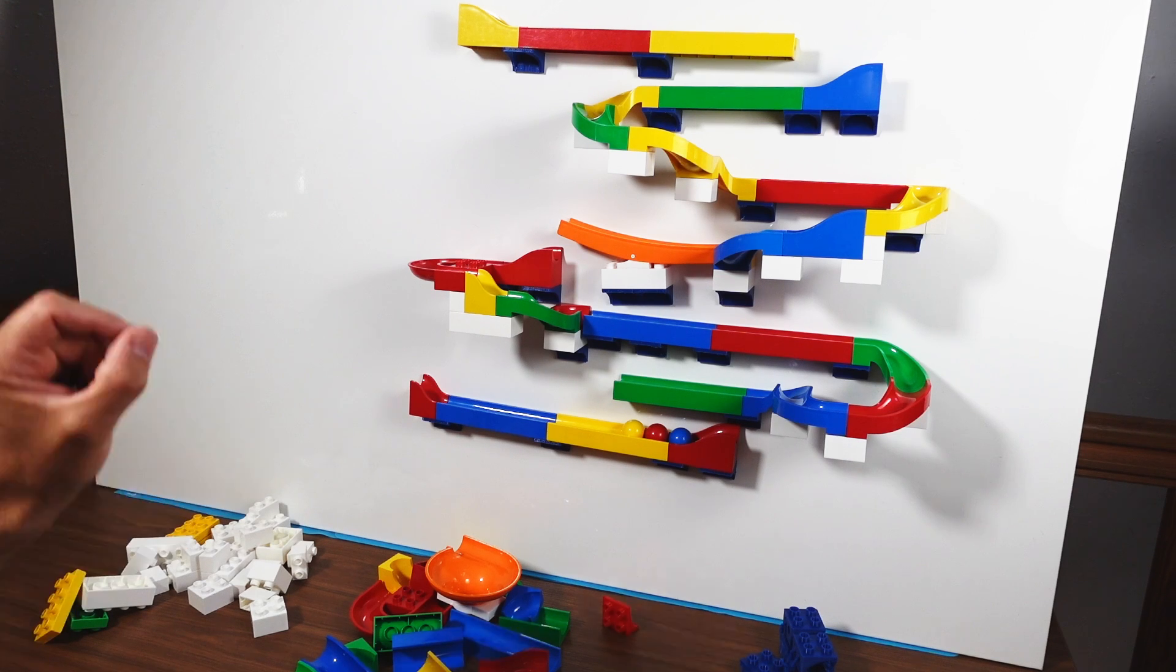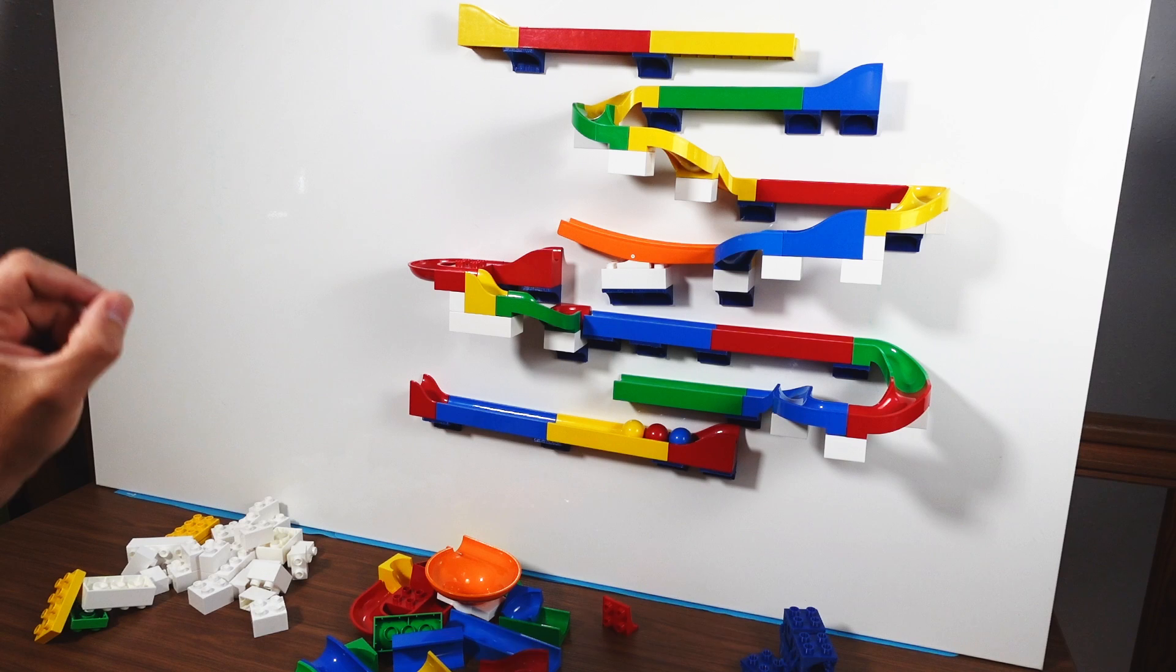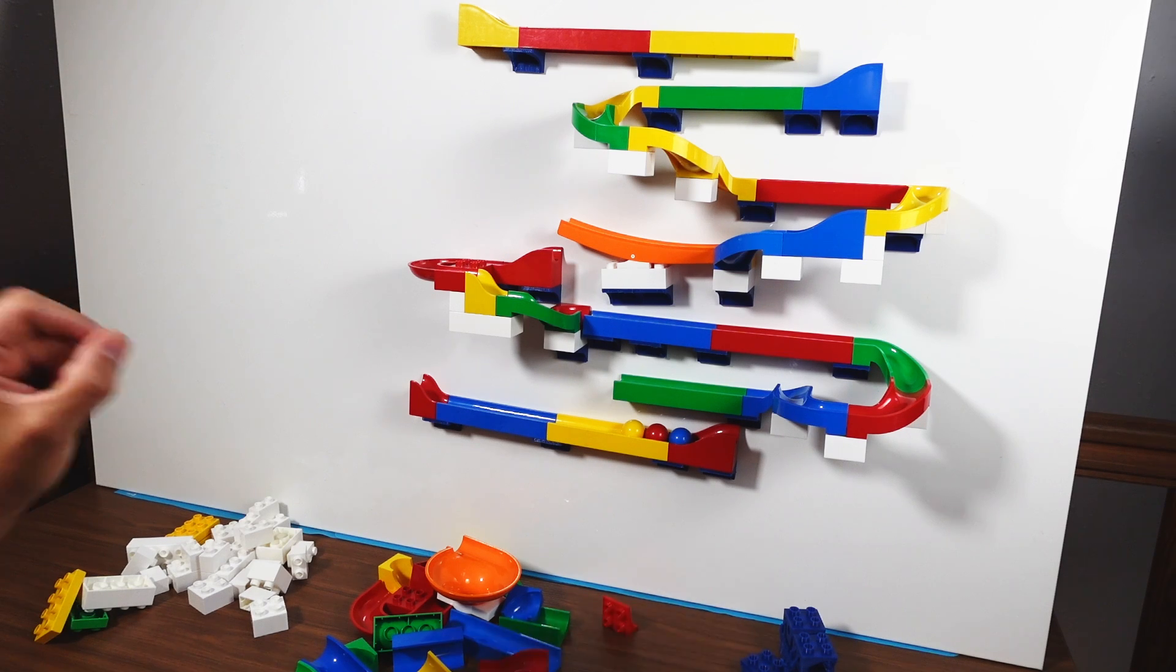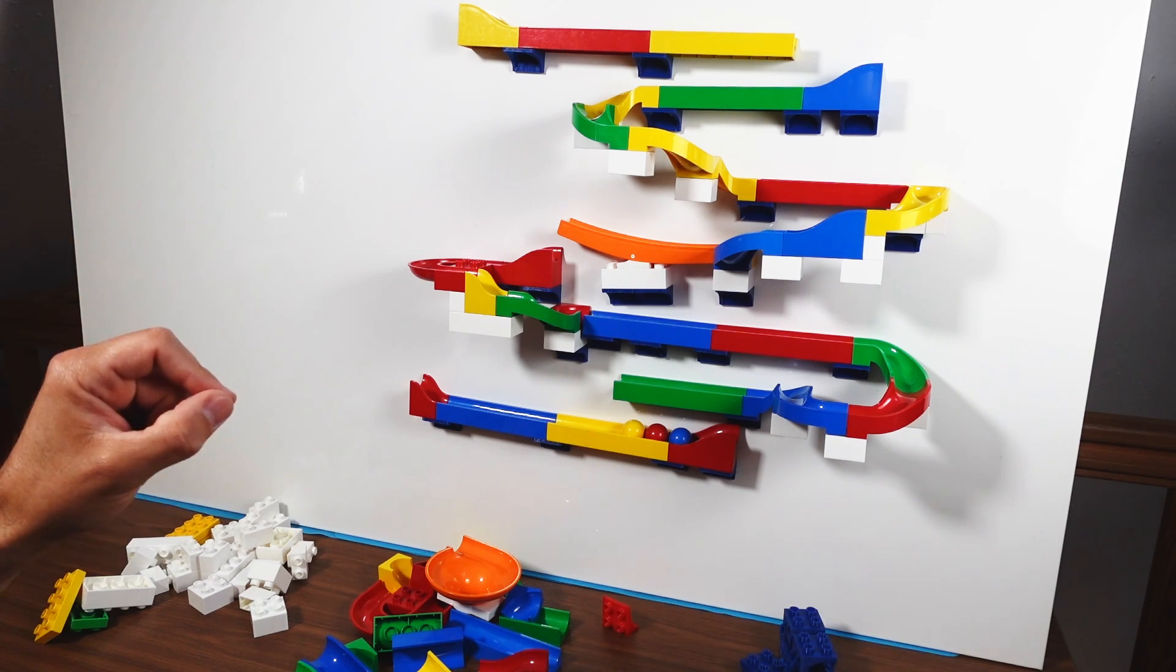Friends of Gravity, in this video I show you how you can verticalize Hubelino, this Lego Duplo compatible marble run system with just one 3D printed part.